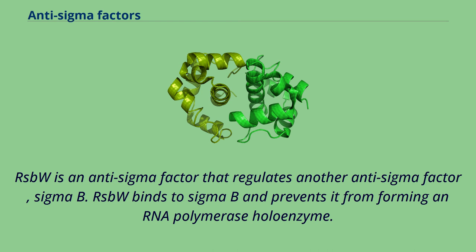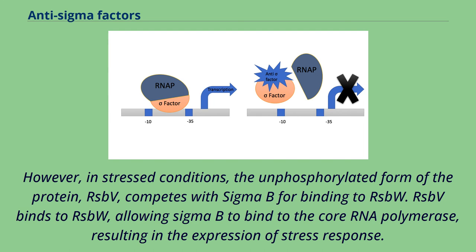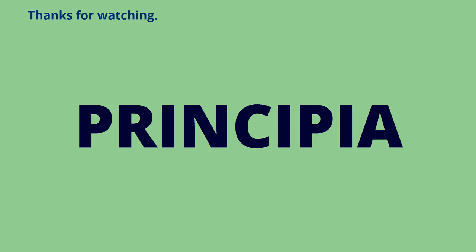RSBW is an anti-sigma factor that regulates another anti-sigma factor, Sigma B. RSBW binds to Sigma B and prevents it from forming an RNA polymerase holoenzyme. However, in stressed conditions, the unphosphorylated form of the protein RSBV competes with Sigma B for binding to RSBW. RSBV binds to RSBW, allowing Sigma B to bind to the core RNA polymerase, resulting in the expression of stress response.